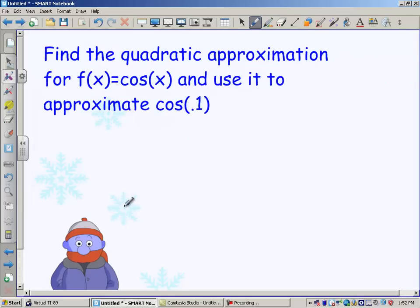Let's do a quadratic approximation for f of x equals cosine x and use it to approximate cosine of 0.1. Well, in my formula, I need a few derivatives, so let's go ahead and calculate those. I'm going to need f prime, which is negative sine. And then I'm going to need f double prime. f double prime is negative cosine.